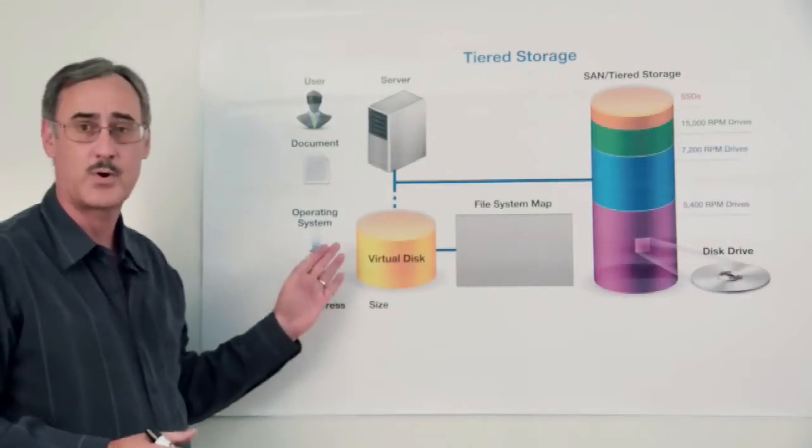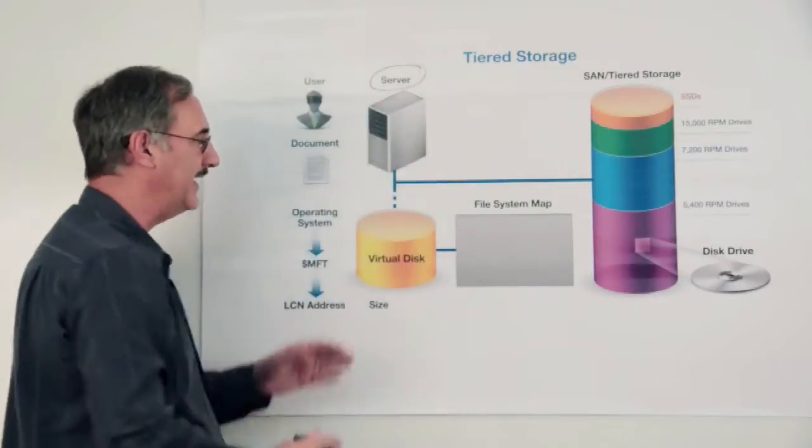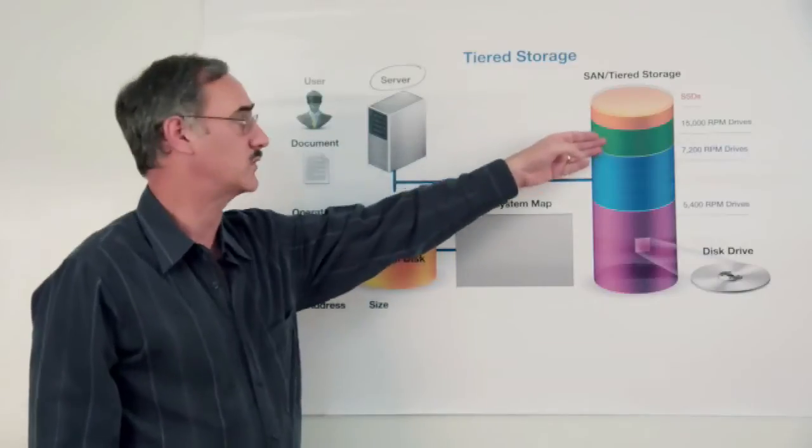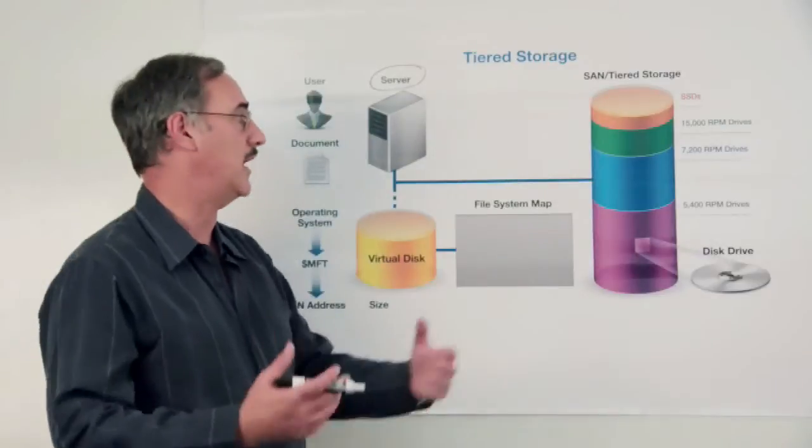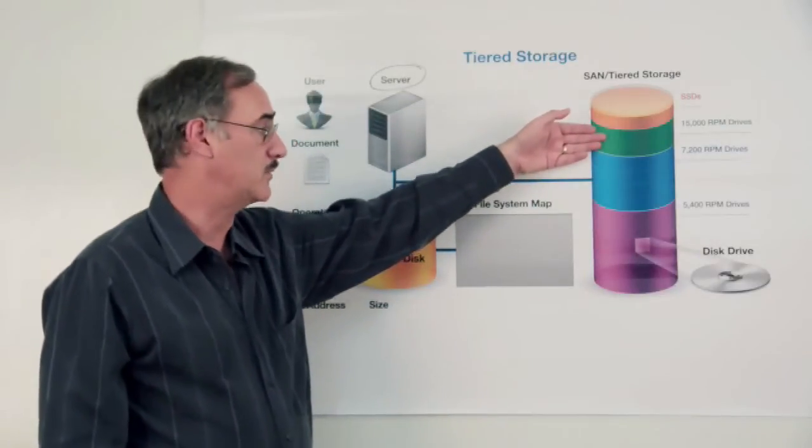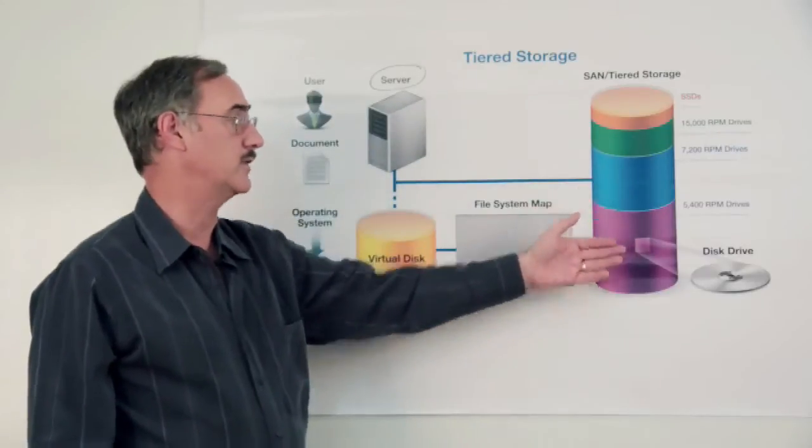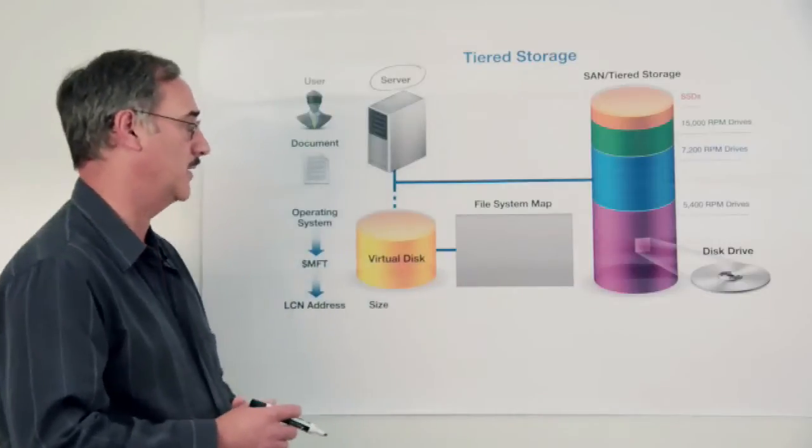But first of all, I think it's important to understand that when you have a Windows computer system, it doesn't really talk to or know anything about the direct storage in a SAN environment. Certainly you can have a combination of solid state drives, 15,000 RPM drives, medium speed 7,200 RPM drives, or even some slower, less expensive storage, 5,400 RPM drives.